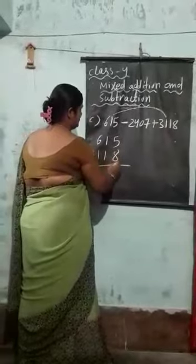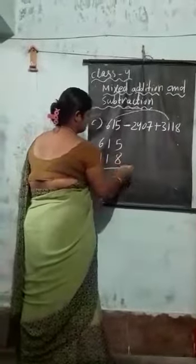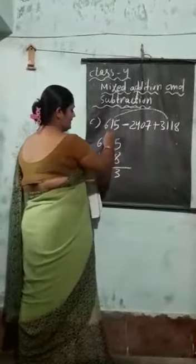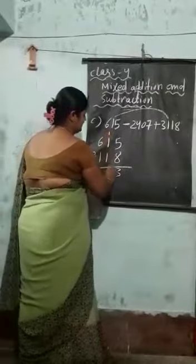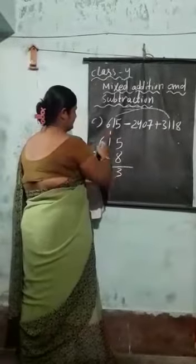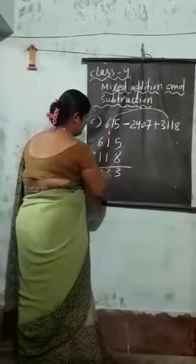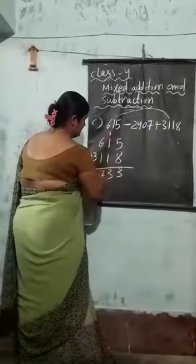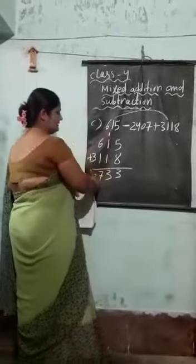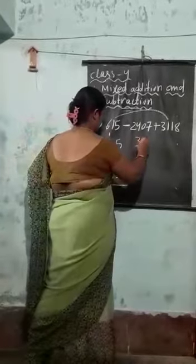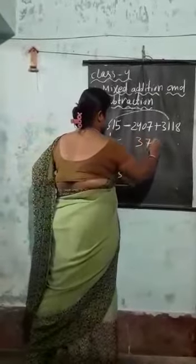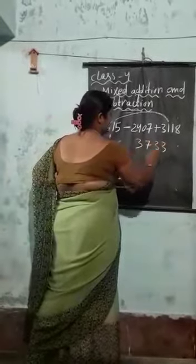8 plus 5 is 13. I keep 1 upside. This is 3 again. 6 plus 1 is 7, and with the carry that's 7, then 3. So, this number I will write here: 3733.